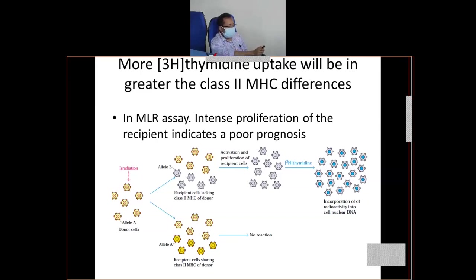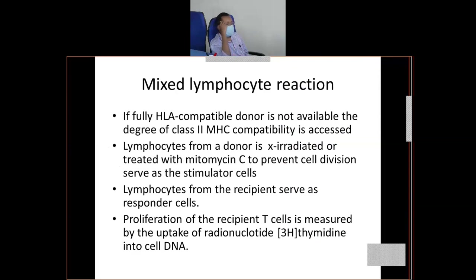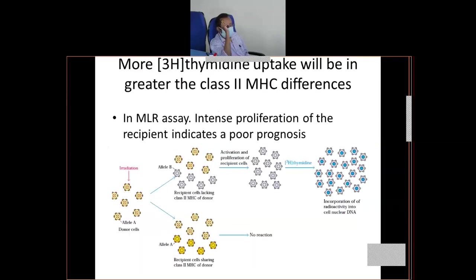Mixed lymphocyte reaction is more practical than HLA typing. Even if you don't get exact HLA typing matching, you can still do graft transfer using mixed lymphocyte reaction. But one drawback is it takes time. Many organ transplants occur from accident victims acting as donors, and since mixed lymphocyte reaction takes time, you cannot use it for transplants from a cadaver.